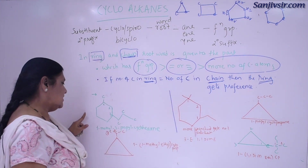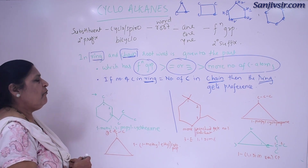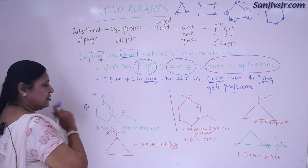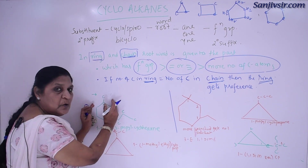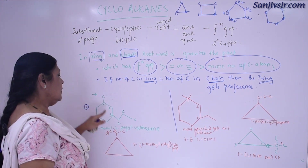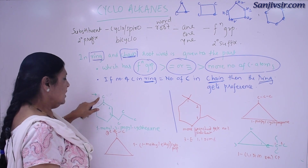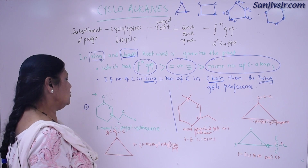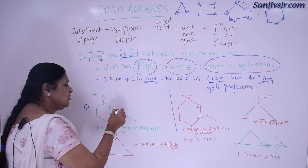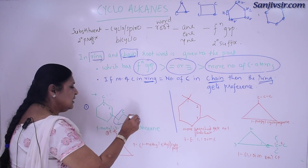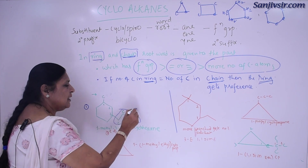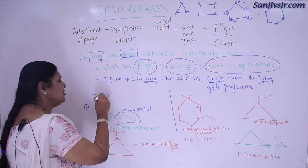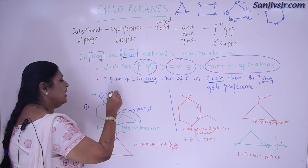See, in this first case, we have cyclohexane — that is our cyclohexane — and on cyclohexane at position one there is a one-carbon substitution, and at position three there is another substitution. The substitution at position three has three carbon atoms, so its name will be propyl, and the substitution at position one will be methyl.